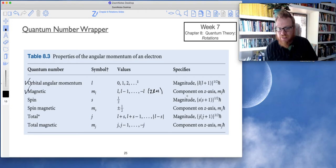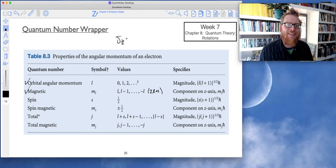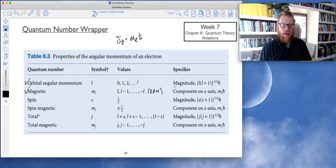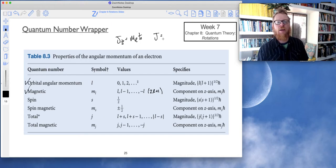The thing to remember about ml is it gives us the component of angular momentum specifically on the z axis. So Jz is given by ml h bar. I'll just use the letter J for total angular momentum, which is given by root l times l plus 1 h bar.